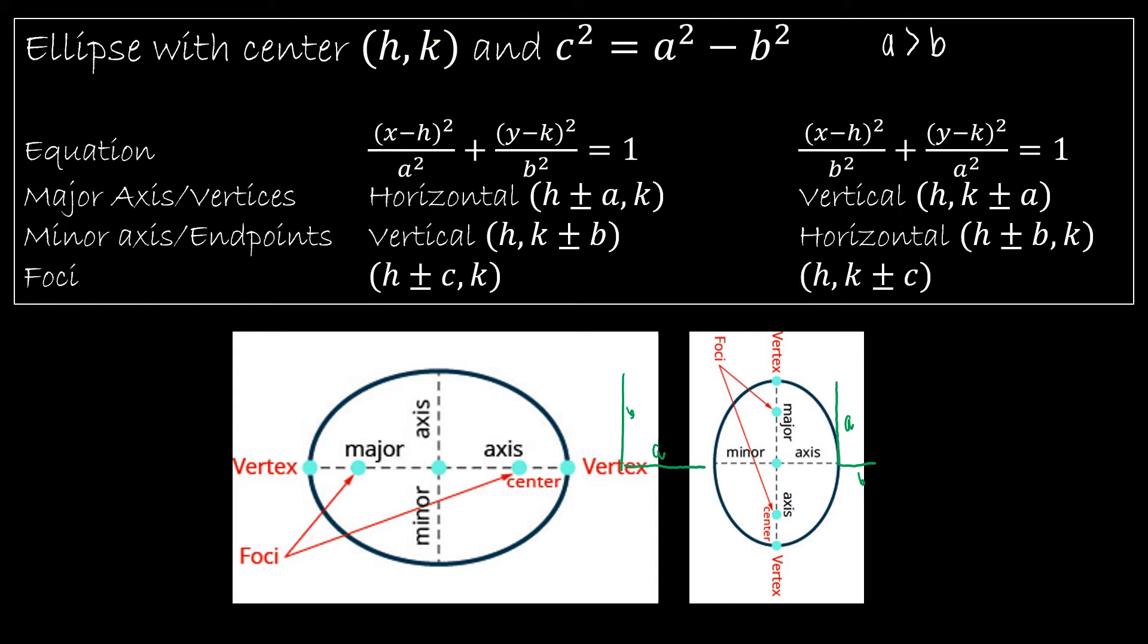And the last value is c. And that's the value that's not going to be given in our equation, but we can solve for it. And that is the distance to the foci. So c is the distance to the foci. So I've done all the work for you to put them into equations for you. Let's take a look at an example.